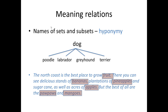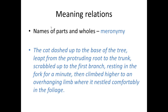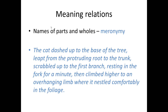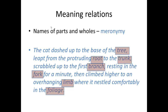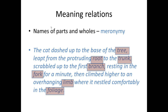There is also a meaning relationship which involves names of parts and names of wholes. If you start talking about a car and then go on to mention engine, driver, tyres and so on, then this will be interpreted as belonging to the car that you started out with. This meaning relation is called meronymy. We can see it in this text: 'The cat dashed up to the base of the tree, leapt from the protruding root to the trunk, scrabbled up to the first branch, resting in the fork for a minute, then climbed higher to an overhanging limb where it nestled comfortably in the foliage.' The whole, which is the tree, is mentioned early in the text, and then a series of parts of the tree — root, trunk, branch, fork, limb, foliage. Note that once the tree is introduced, the writer doesn't have to specify which root and trunk, because it's clearly the root and trunk of the tree that was mentioned first.